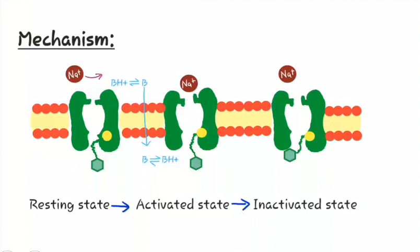Now let us study the mechanism of local anesthetics. These are the receptors of local anesthetics. This is the M gate and this is the H gate, which are located in the axonal membrane.